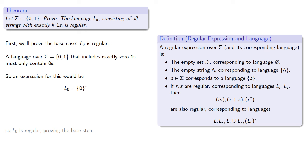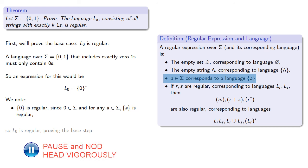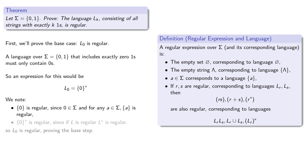And so from our definition, we see that zero is regular, since zero is one of our symbols. And for any individual symbol, the language consisting of just that symbol is regular. And the star closure is regular, since if a language is regular, so is its closure. And so L0 is regular, proving our base step.